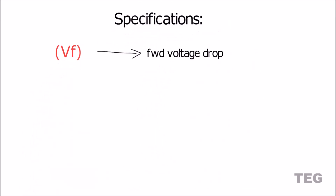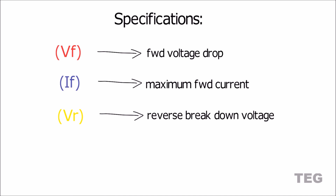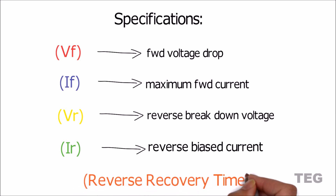First, Vf indicates the forward voltage drop when current flows from the P terminal to the N terminal — that's why it's called forward voltage drop. If is the maximum forward current a diode can handle. Vr is the reverse breakdown voltage when current flows from the N terminal to the P terminal, that is in the reverse direction. IR is the quantity of current that flows when the diode is reverse biased, meaning when current flows in reverse direction. And lastly, reverse recovery time, which will be explained later.